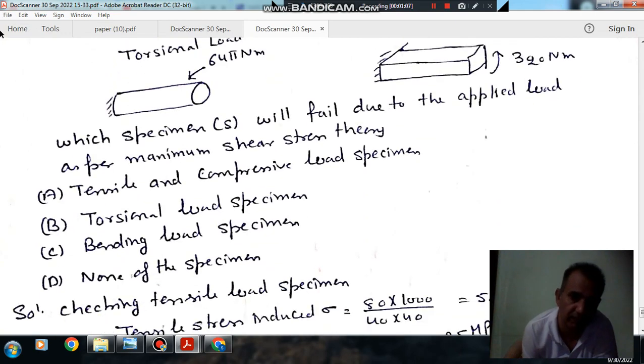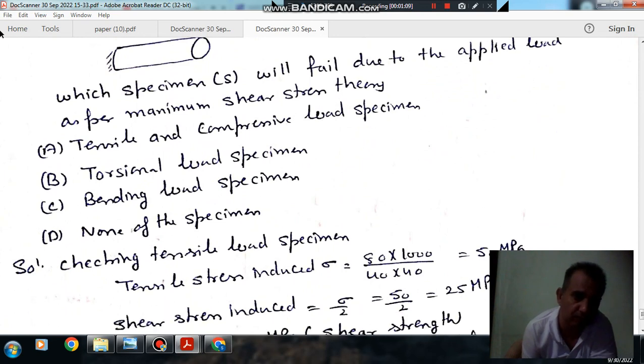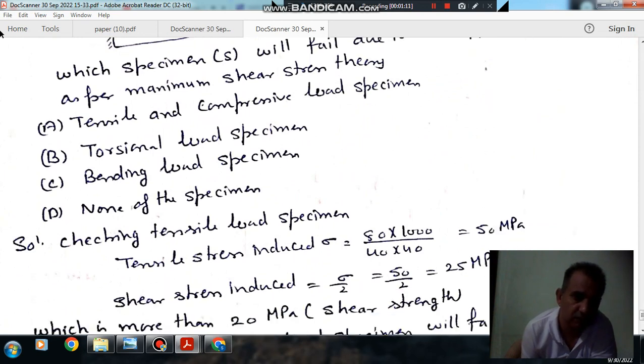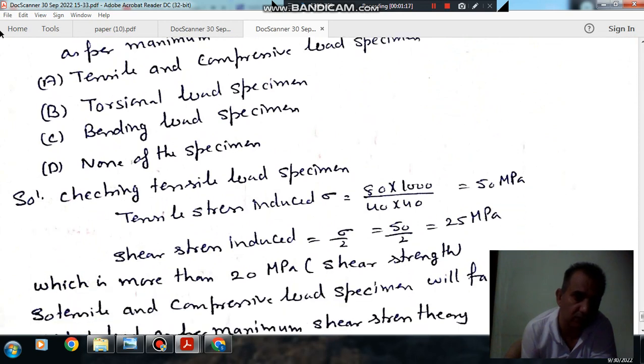Which specimen will fail due to the applied load as per maximum shear stress theory? Option A: tensile and compressive load specimen. Option B: torsional load specimen. Option C: bending load specimen. Option D: none of the specimen.